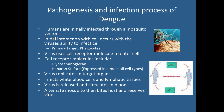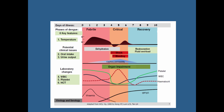Regarding the pathogenesis: humans are initially infected through the mosquito vector. The primary cellular targets are phagocytes — you don't need to know the receptor details, but the transmission cycle is essentially human to mosquito to human, with some animal reservoirs also involved.